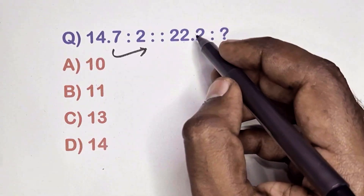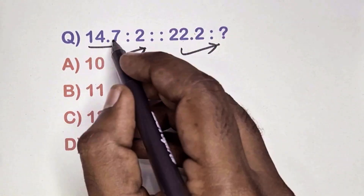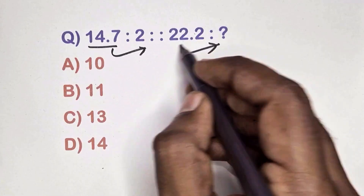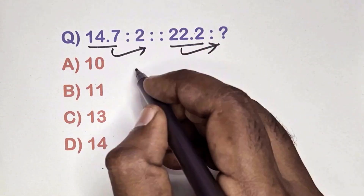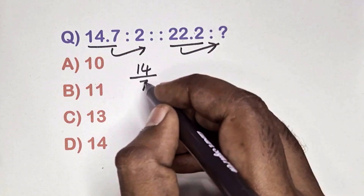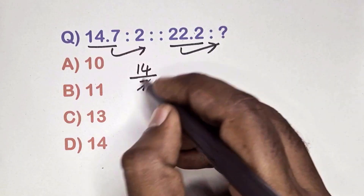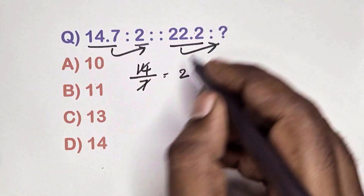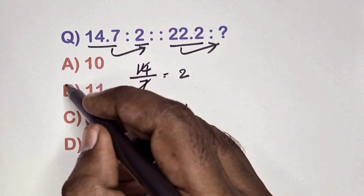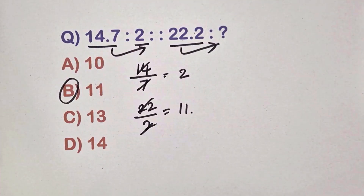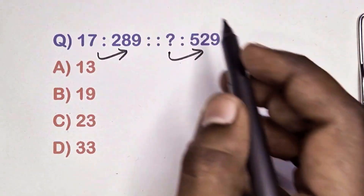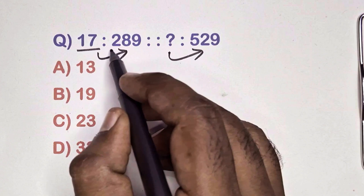Find the relation between this analogy question. This involves decimal numbers, so no need to worry — this is an easy method. Put the number divided by after the decimal point: 7 divided by 7 gives 2.2. Same way, 22 divided by 2.2 gives 11. Option B is the correct answer.